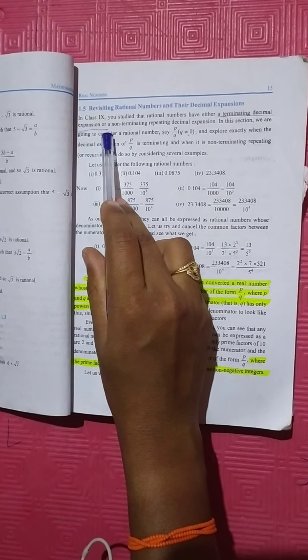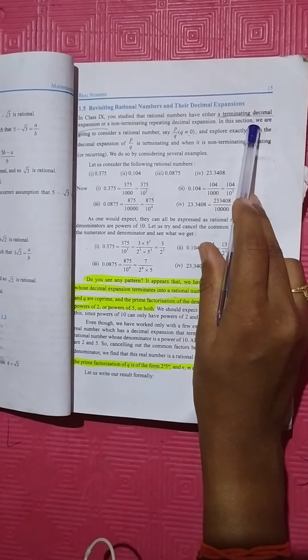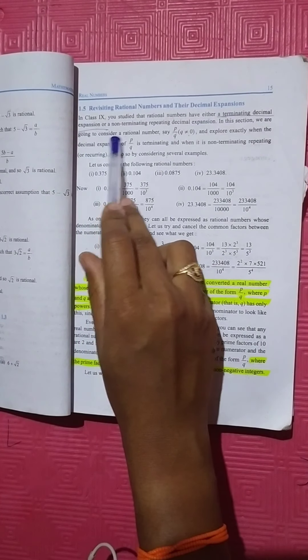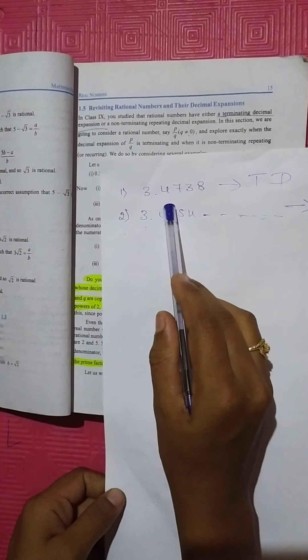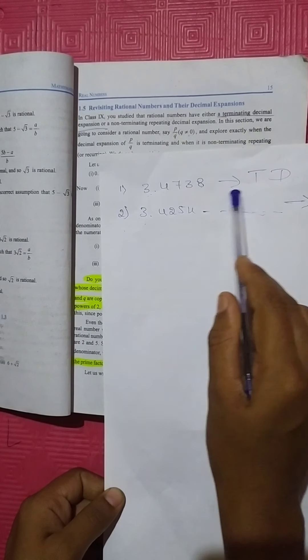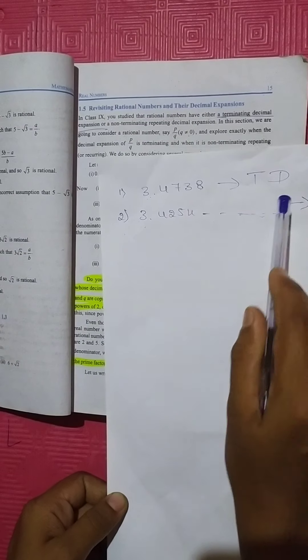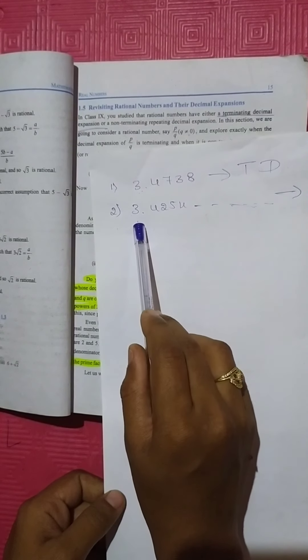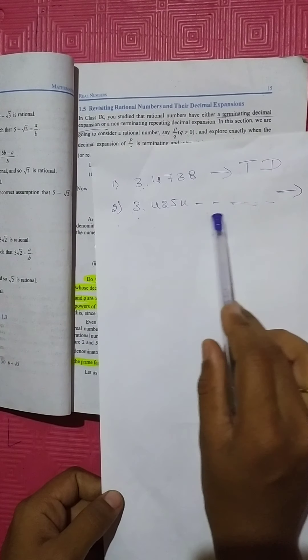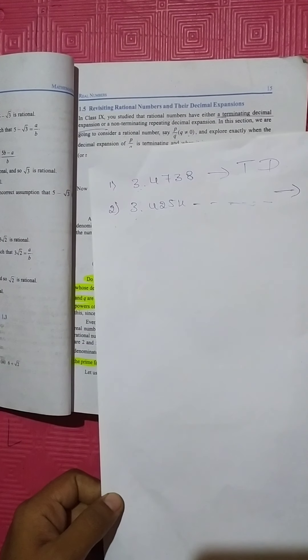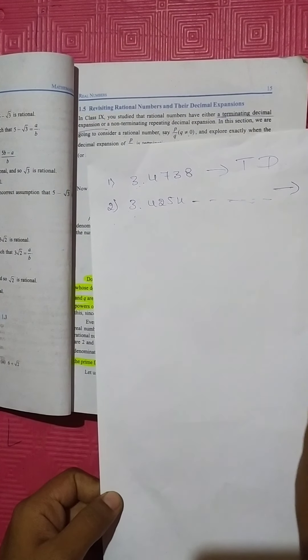In class 9, you studied that rational numbers have either a terminating decimal expansion or a non-terminating repeating decimal expansion. For example, 3.4738 is a terminating decimal. The second one, 3.4254 with continuous numbers, is considered a non-terminating repeating decimal expansion, also called reoccurring.